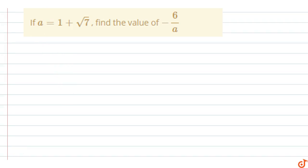In this question, if a equals 1 plus root 7, then find the value of minus 6 upon a. Minus 6 upon a, a media 1 plus root 7 value, so minus 6 upon a, value of a minus 6 upon a is 1 plus root 7.